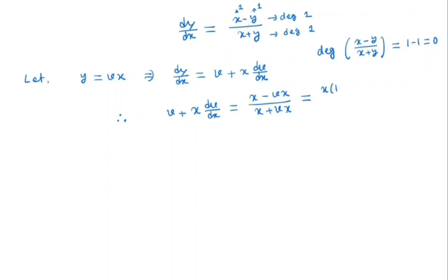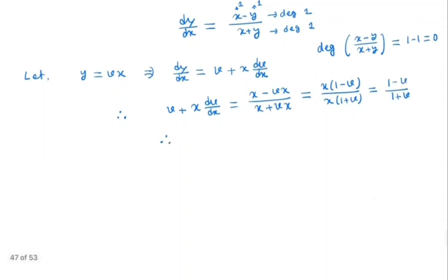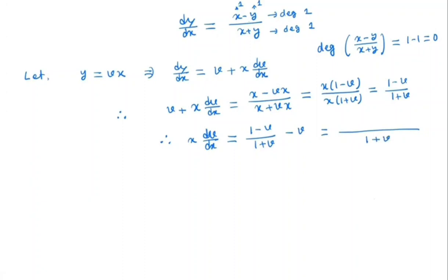By canceling x out, we get (1 minus v) divided by (1 plus v). So we have x dv/dx equal to (1 minus v)/(1 plus v) minus v. Expanding this, we get 1 minus v minus v minus v squared, which gives us (1 minus 2v minus v squared) divided by (1 plus v).